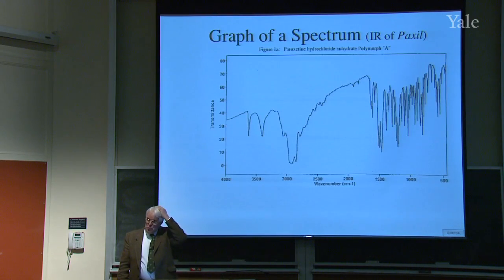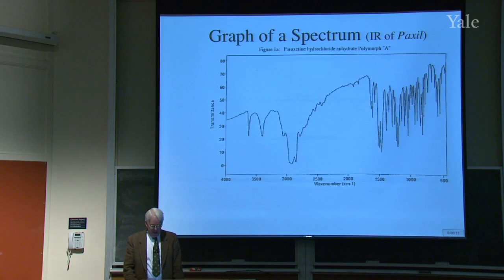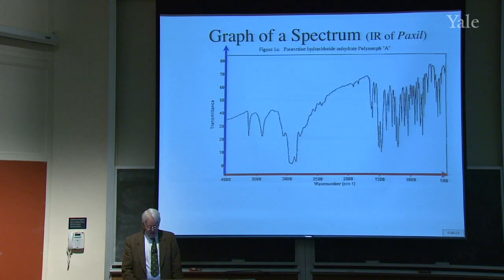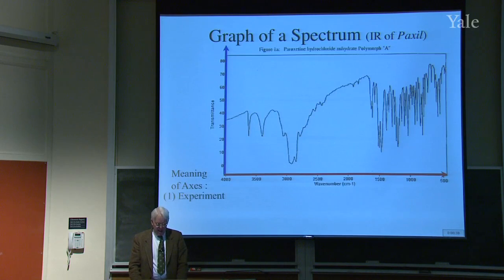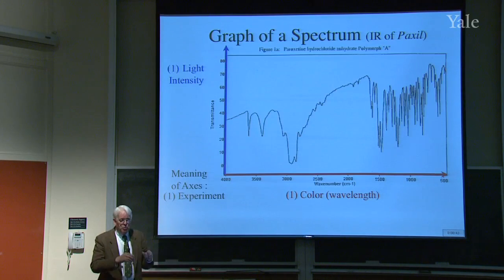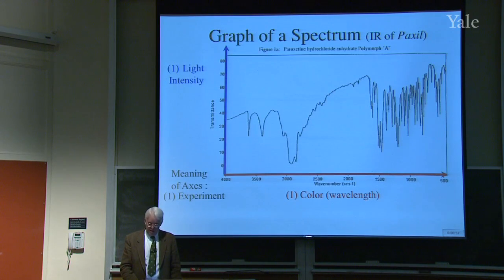A spectrum is usually presented as a graph. The axes depend on your perspective on spectroscopy. In one graph, the coordinates are wave number and transmittance. Experimentally, the horizontal axis is color — which light you're using — and vertically it's the light intensity: how much light of a certain color gets absorbed by your sample, or how much transmits through. In this particular spectrum, transmittance is plotted — how much light gets through rather than how much gets absorbed.